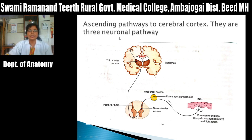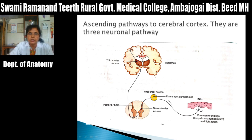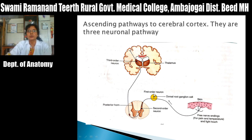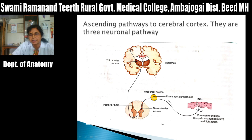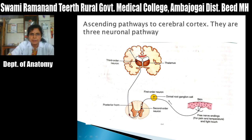In the three-neuronal pathway of ascending tracts: the first order neuron is situated in the dorsal root ganglia, which is present on the dorsal root of the spinal nerve. Peripheral processes of this first order neuron carry sensation from peripheral receptors. The central processes carry sensation to the dorsal horn of the spinal cord, where they relay. Second order neurons are present in the dorsal horn of the spinal cord.